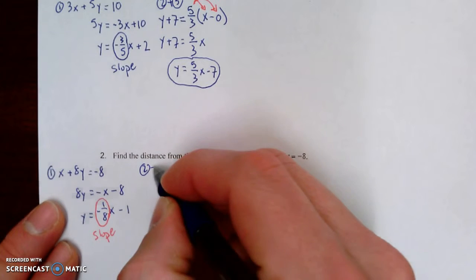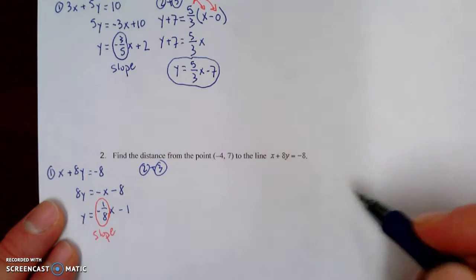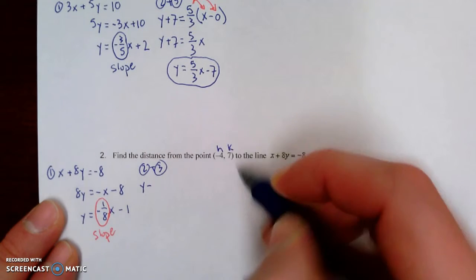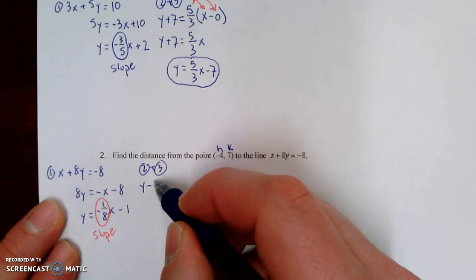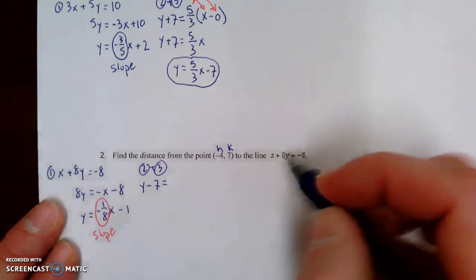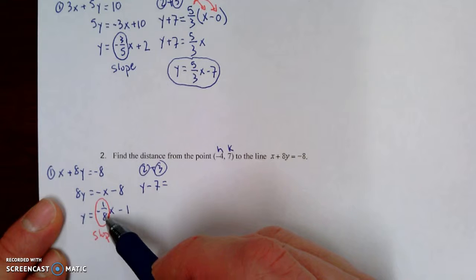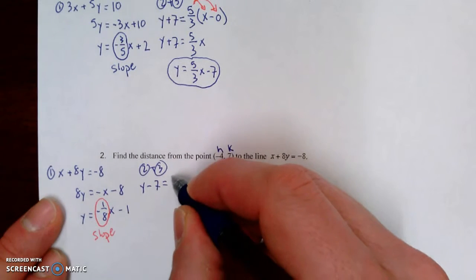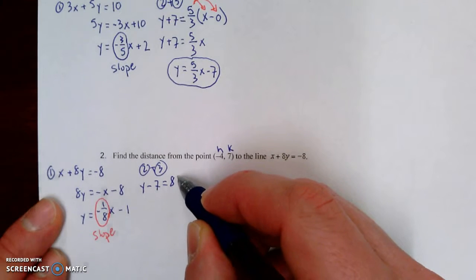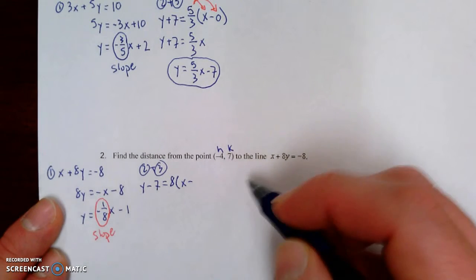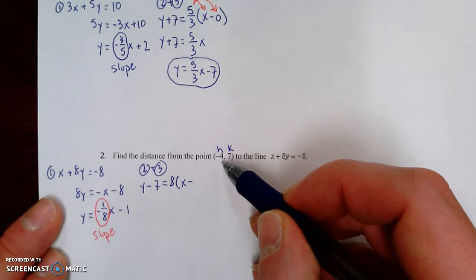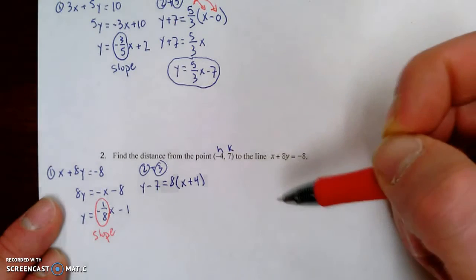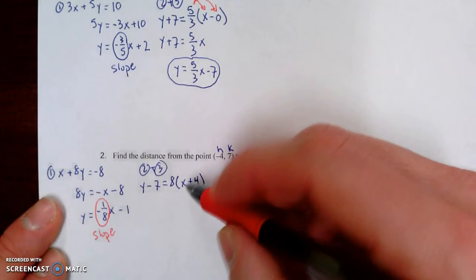Step two plus step three. So first we've got to write our equation. y minus, and here's our point (h, k), so it's y minus seven, equals, our original slope was one-eighth, so we're going to flip it upside down and change it positive, and it becomes 8x minus, and this is going to be x minus negative four, so it turns out to be x plus four. Now we're going to change this into slope-intercept form.